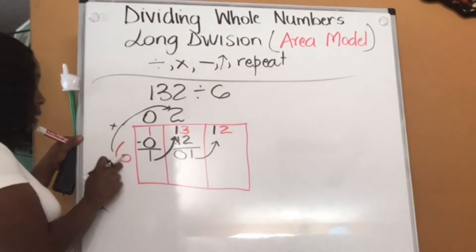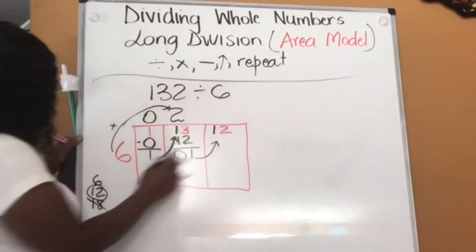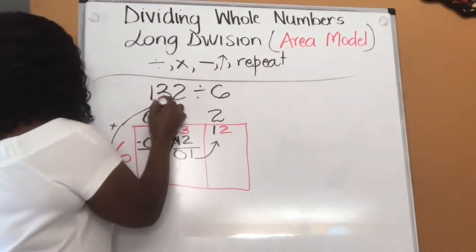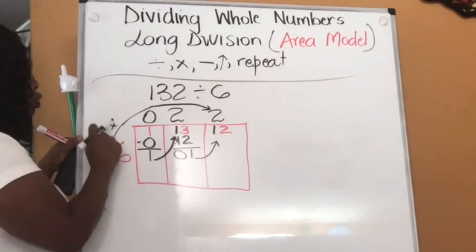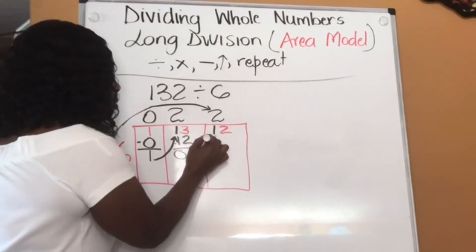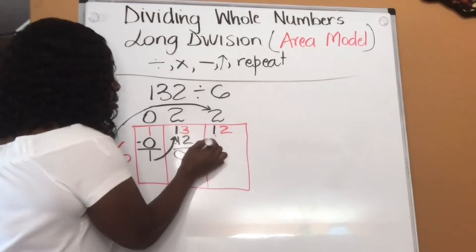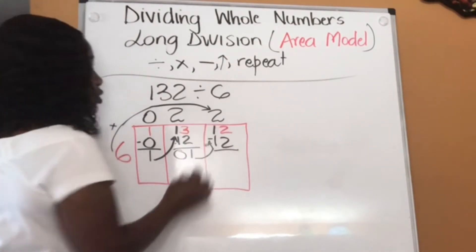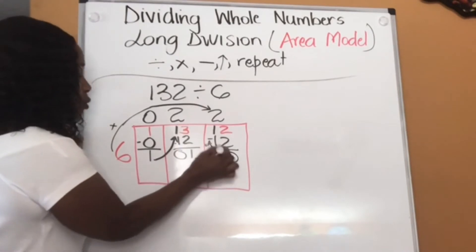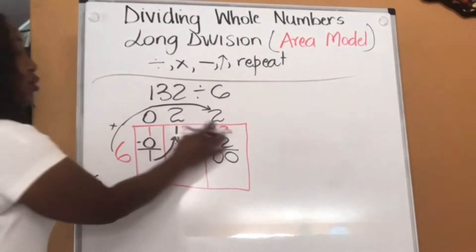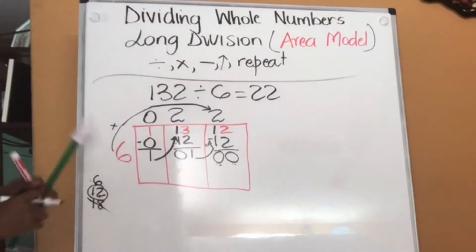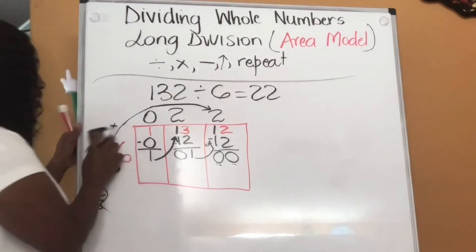Now I'm going to divide. How many sets of 6 can I get from 12? That's 1, 2 — so I put 2 there. Now I'm going to multiply this 6 by the 2 I just wrote. 6 times 2, that's 12. Then I'm going to subtract: I have 2, I give away 2, I'm left with 0. I have 1, I give away 1, I'm left with 0. I'm done, because there are no other digits and I end up with two zeros. 132 divided by 6 is 22. Easy breezy!